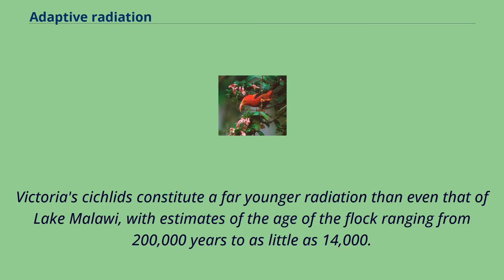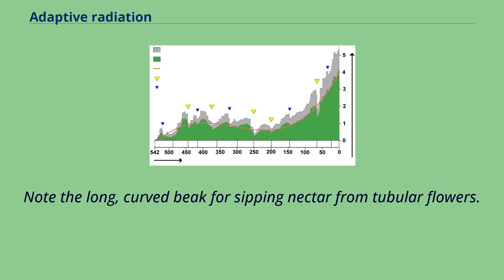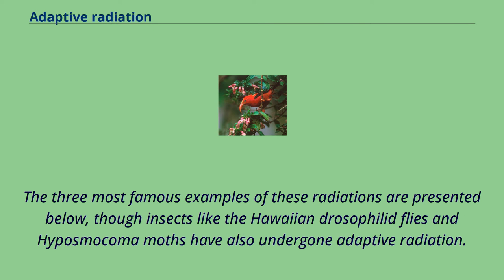An iiwi — note the long, curved beak for sipping nectar from tubular flowers. Hawaii has served as the site of a number of adaptive radiation events, owing to its isolation, recent origin, and large land area. The three most famous examples of these radiations are presented below, though insects like the Hawaiian drosophilid flies and hyposmocoma moths have also undergone adaptive radiation.